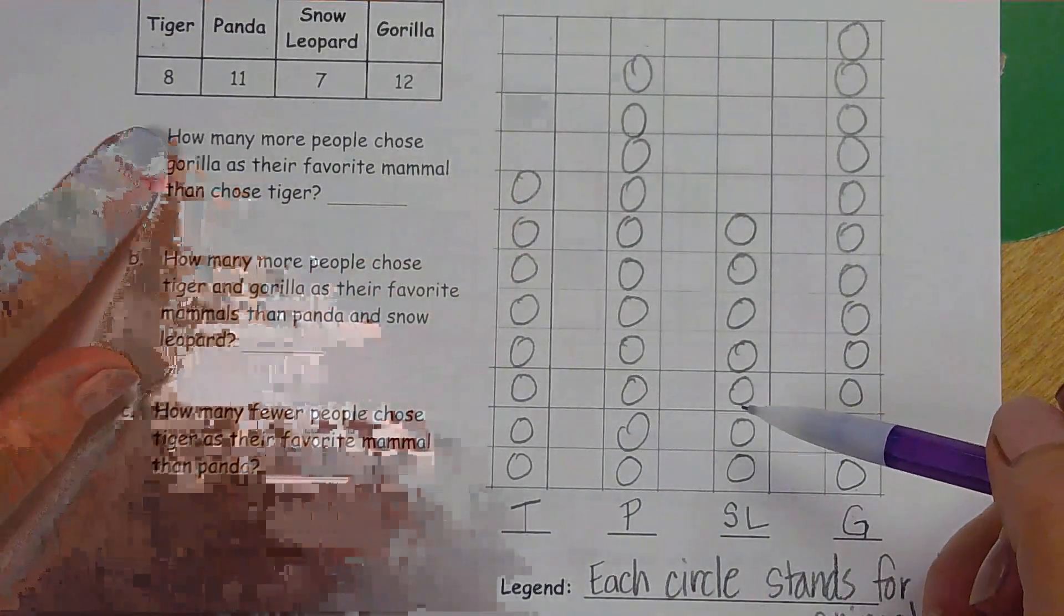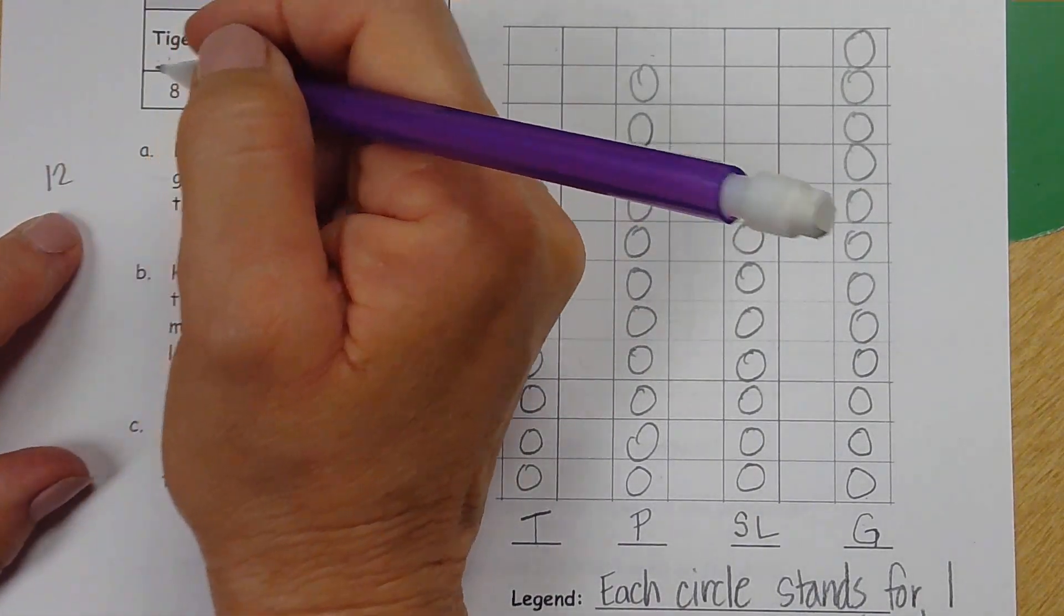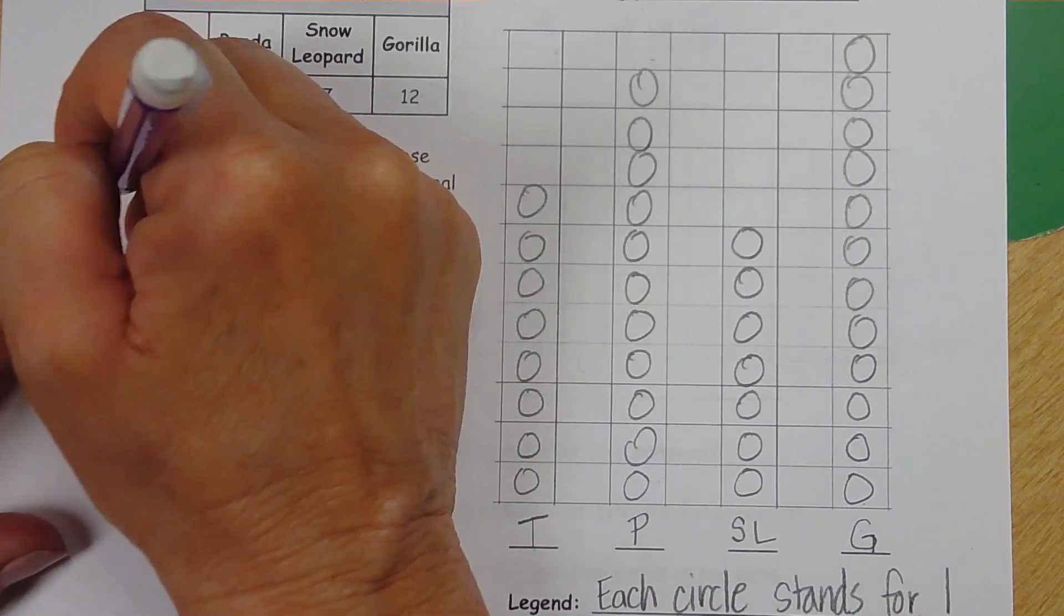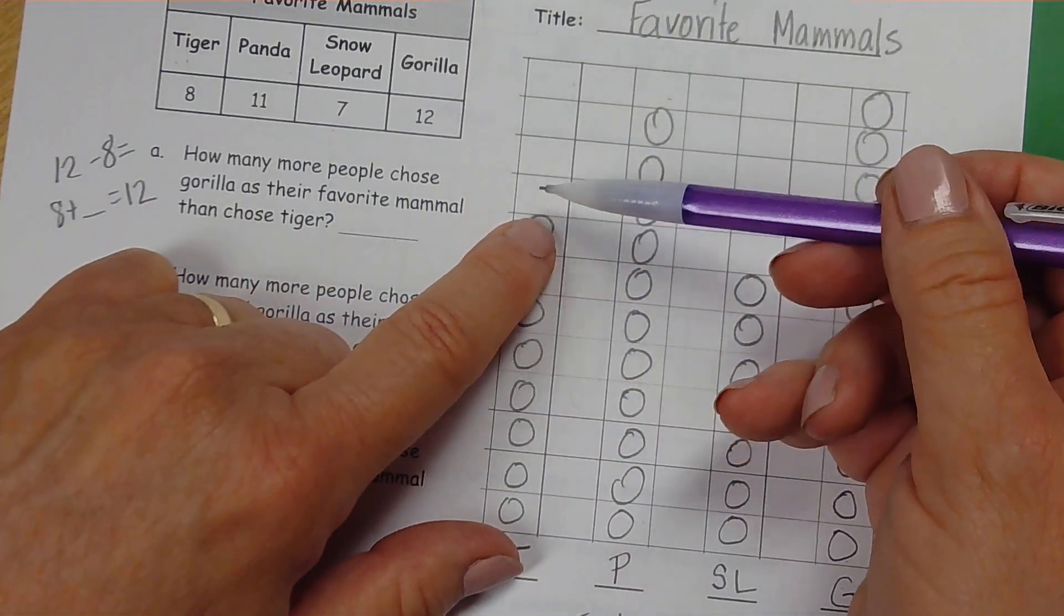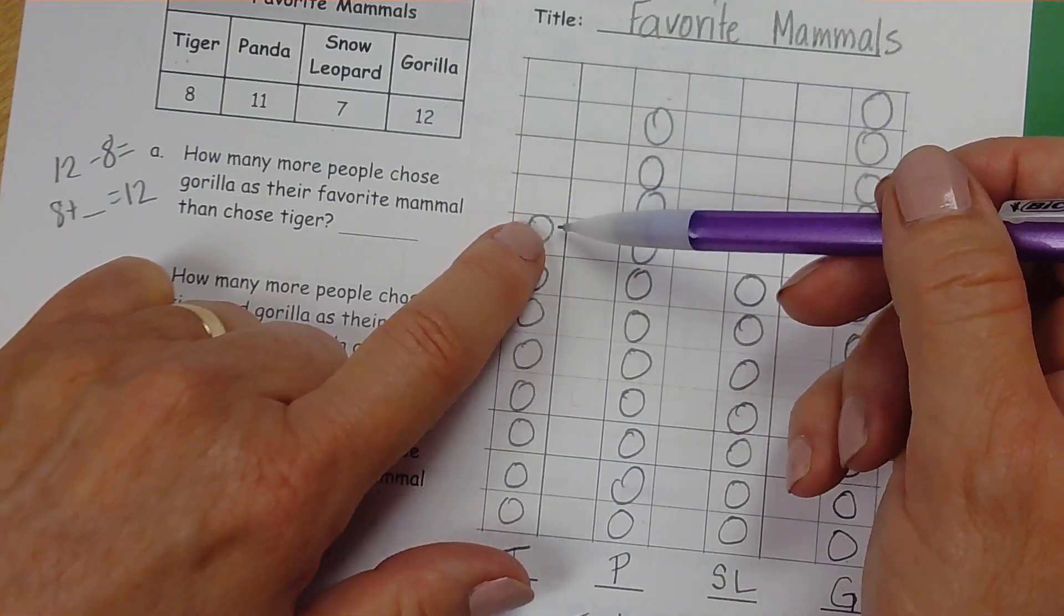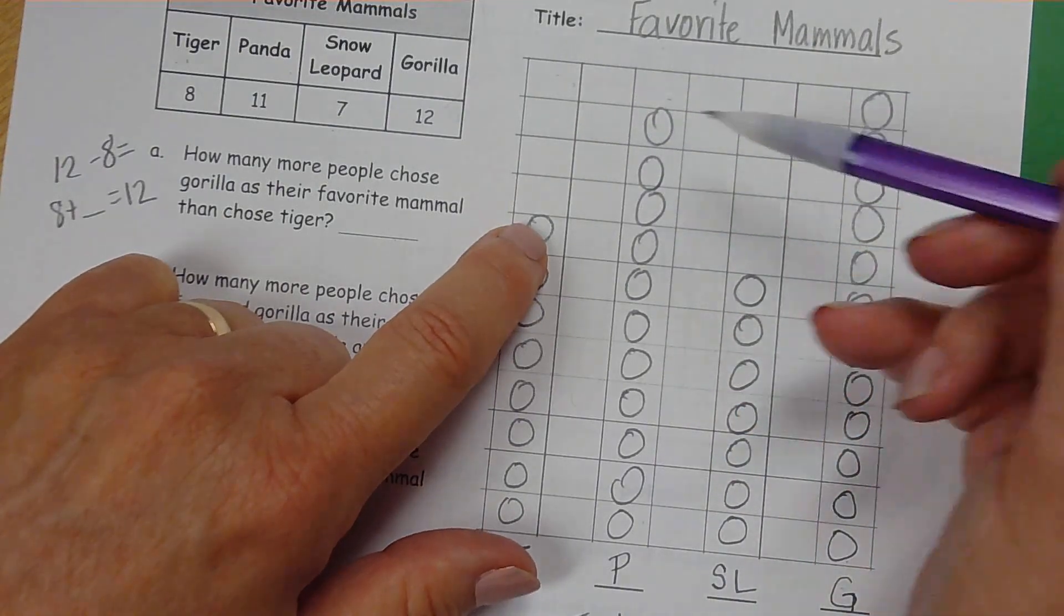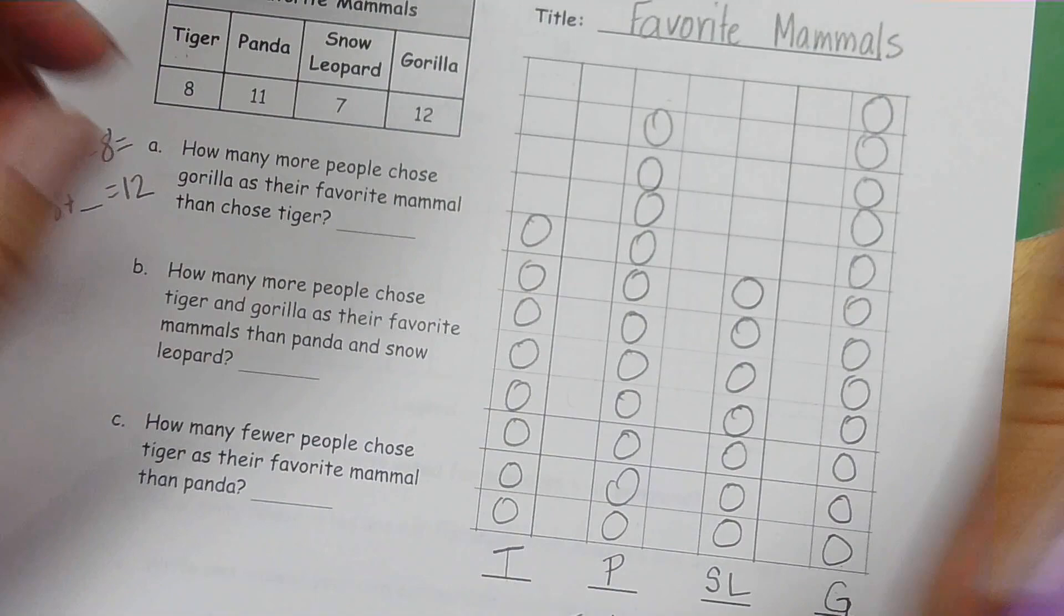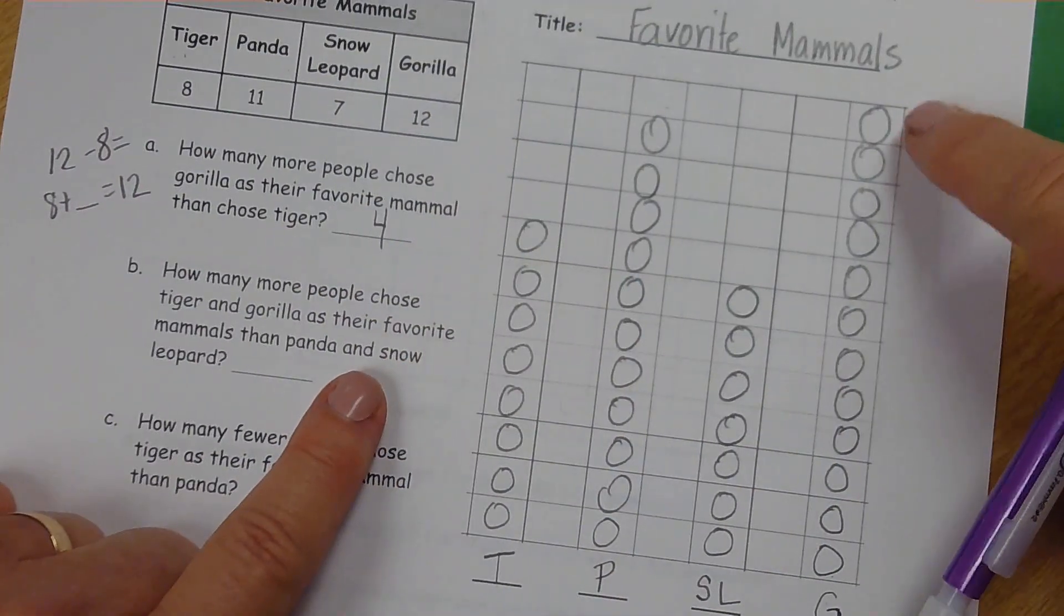Here's tiger and here's gorilla. We need to know what is the difference between how many chose tiger and how many chose gorilla. In other words, how many more people would have had to have chosen tiger for it to be the same as gorilla. We need to know that the tiger has 8 and the gorilla has 12. So we can subtract 12 minus 8 or count up from 8 so that we're saying 8 plus something equals 12. In a chart like this, we can also count how many more spaces would I need to fill for it to be the same: 1, 2, 3, 4 more. That is the difference. 4 more people chose gorilla than chose tiger.